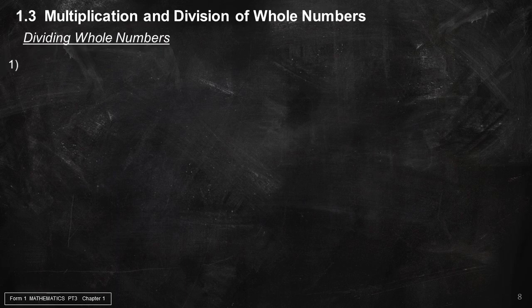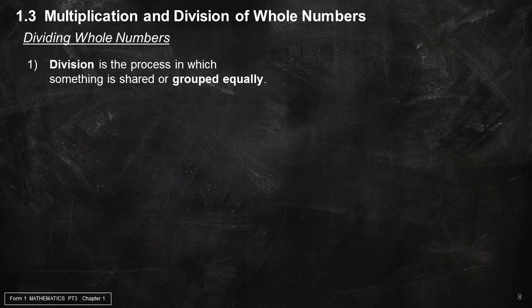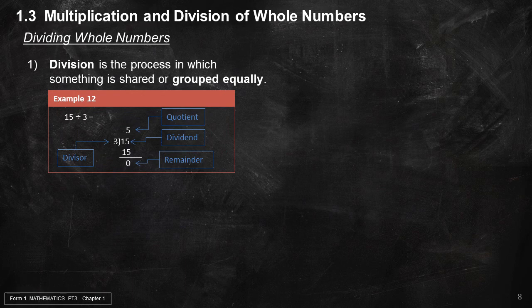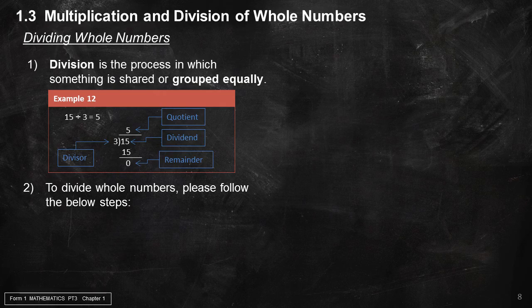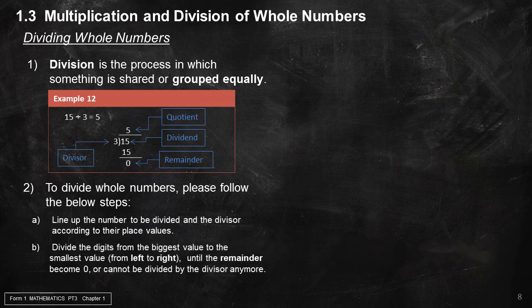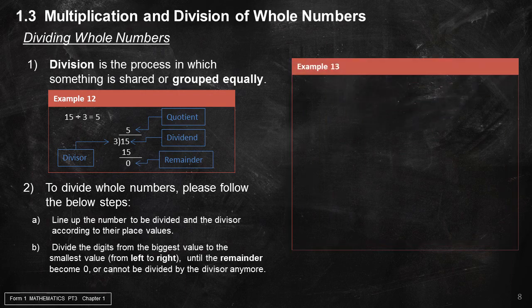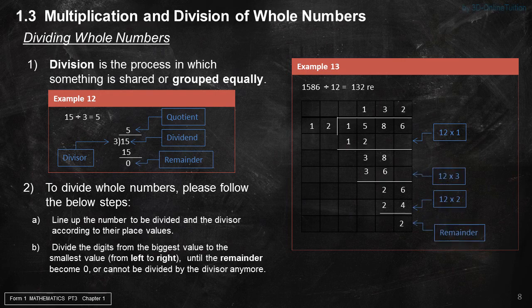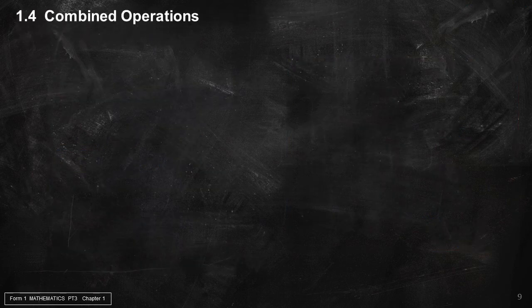Dividing whole numbers: division is the process in which something is shared or grouped equally. Example 12: 15 ÷ 3 = 5. To divide whole numbers: A) Line up the number to be divided and the divisor according to their place values. B) Divide the digits from the biggest value to the smallest value, from left to right, until the remainder becomes 0 or cannot be divided by the divisor anymore. Example 13: 1,586 ÷ 12 = 132 with a remainder of 2.